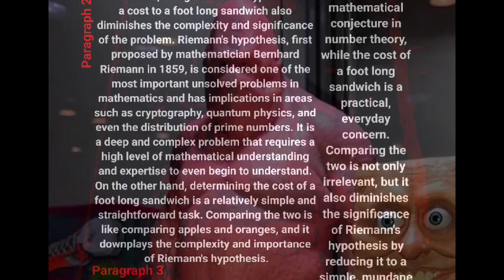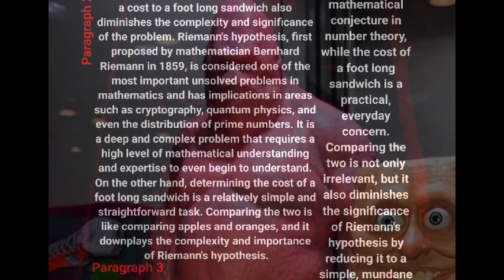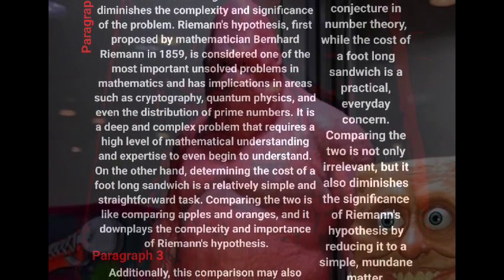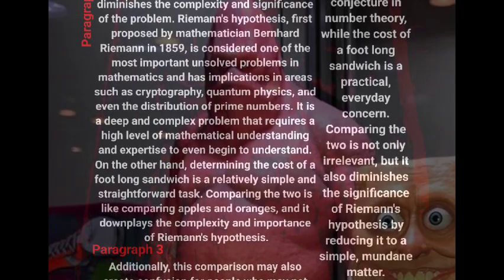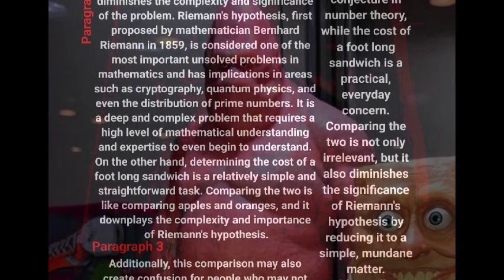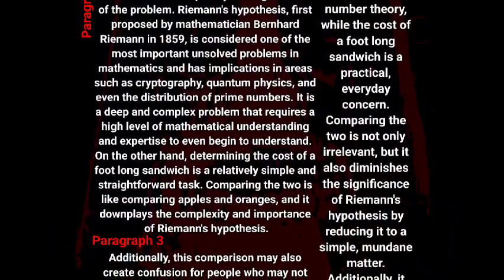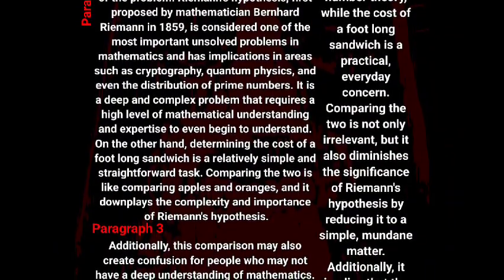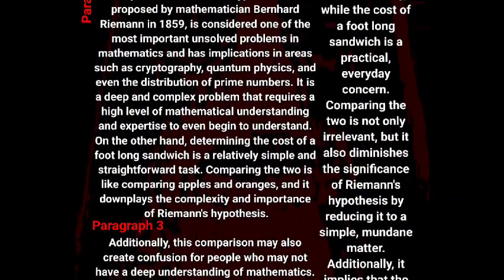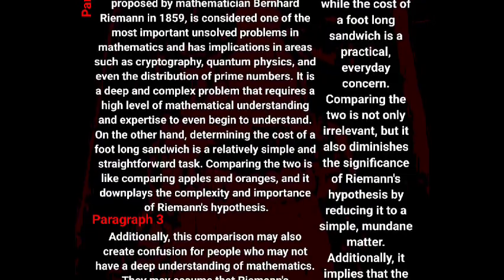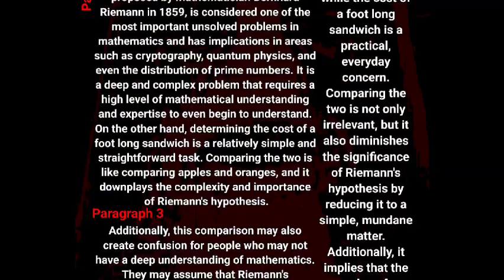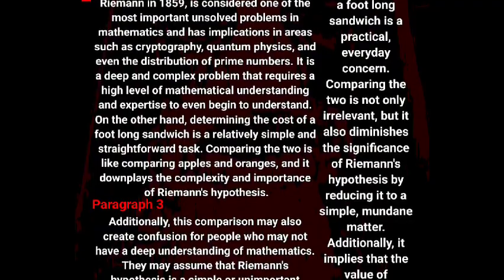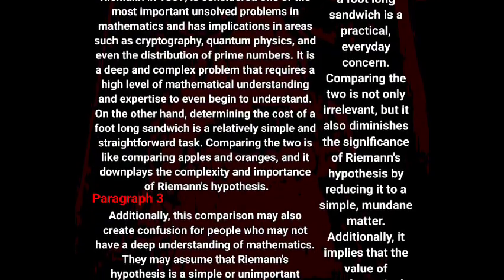Riemann's Hypothesis is not the cost of a food-like sandwich. This comparison would diminish the complexity and significance of the problem. Riemann's Hypothesis was first proposed by mathematician Bernhard Riemann in 1859, and is considered one of the most important unsolved problems in mathematics, with implications in areas such as cryptography, physics, and even the distribution of prime numbers.